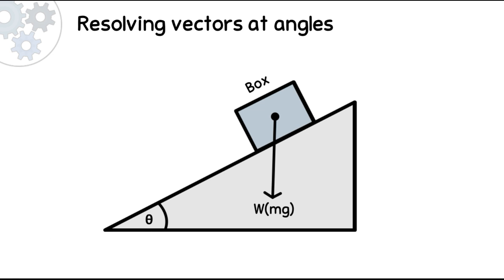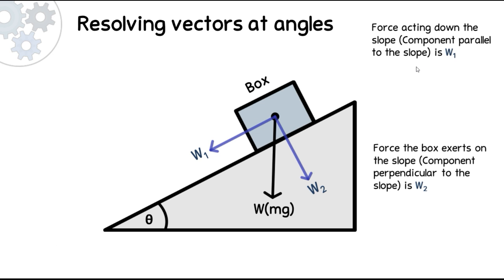Looking in a bit more detail, you can resolve this weight vector into two components: W1 and W2. W1 is the force that acts down the slope, and W2 is the force that acts against the slope — the force that the box exerts on the slope. W1 is the component parallel to the slope, and W2 is the component perpendicular to the slope, at a right angle.